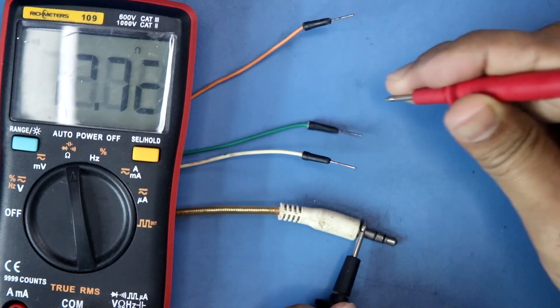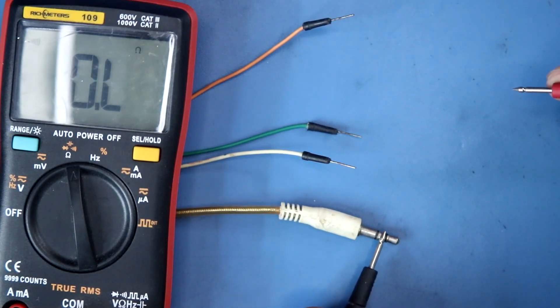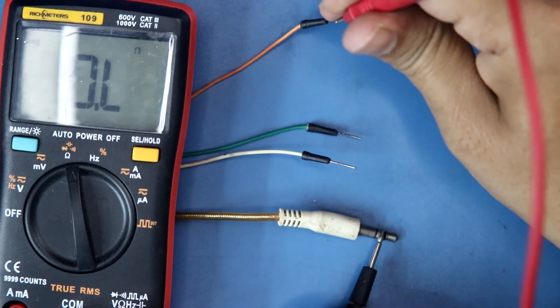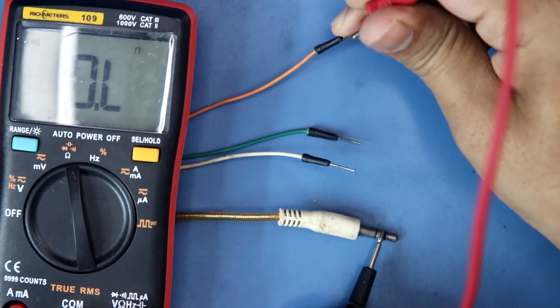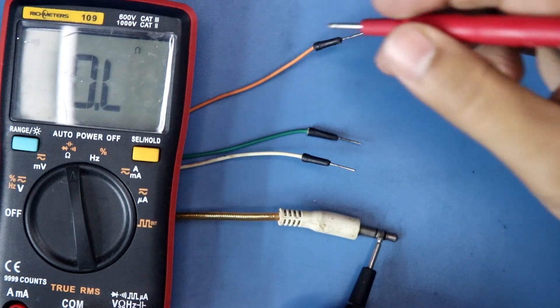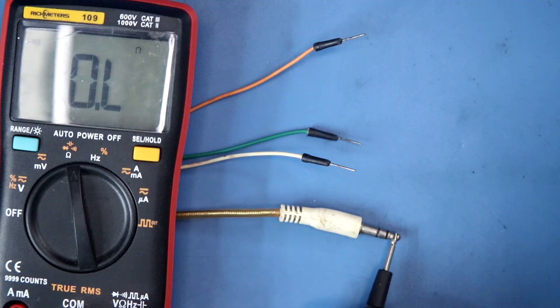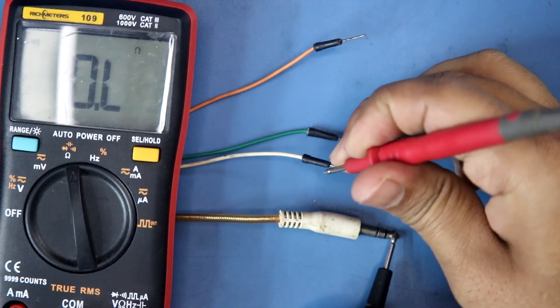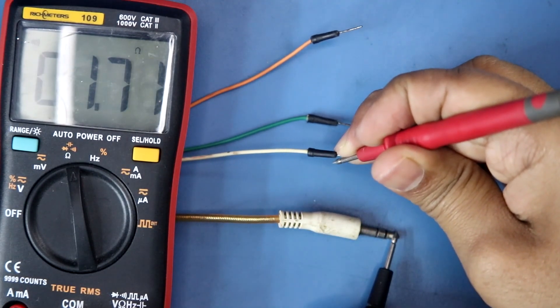So the green pin is ground, the orange pin is for right, and the white pin is left.